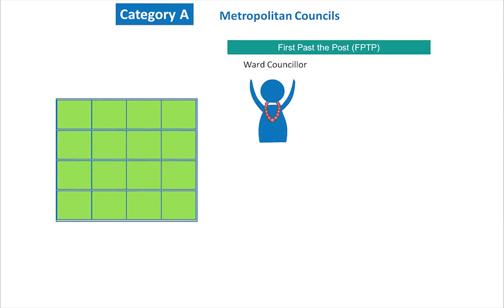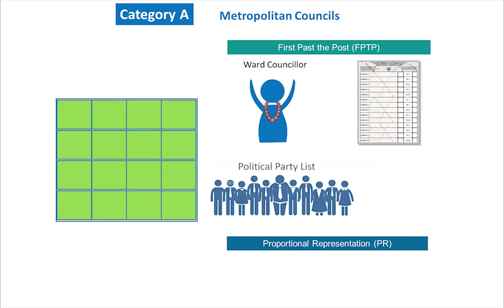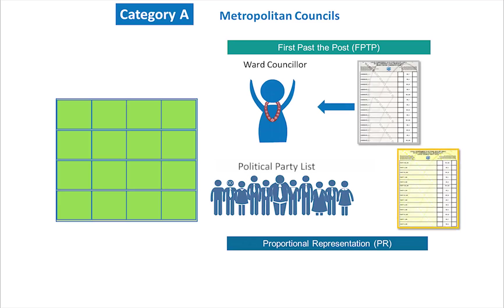A voter can vote for a ward councillor and for a political party list. A voter will receive two ballot papers. The white or grey ballot paper is to elect the ward councillor. The yellow ballot paper will elect the political party list into a metropolitan council.